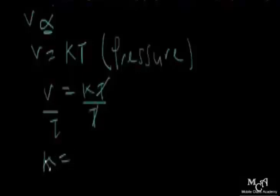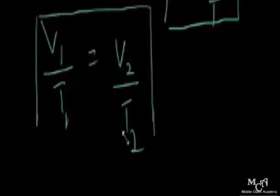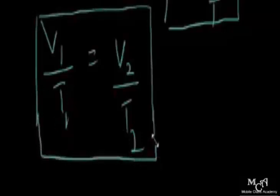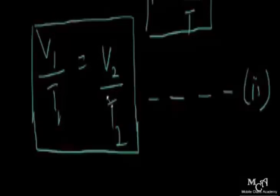When we have two conditions — initial and final — Charles' Law gives us: V1/T1 = V2/T2. Learn how to derive formulas in chemistry; once you know how to derive your formula, you can always solve the question. So the Charles' Law equation is V1/T1 = V2/T2.